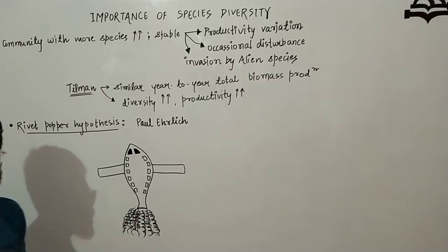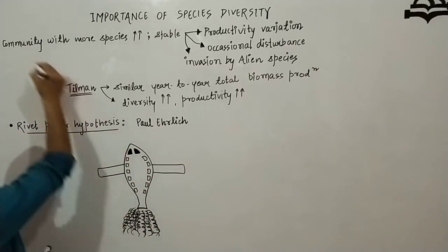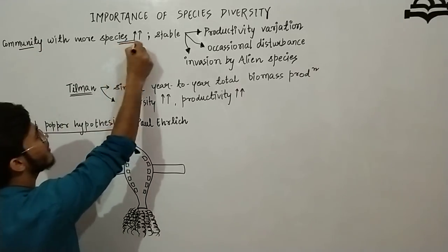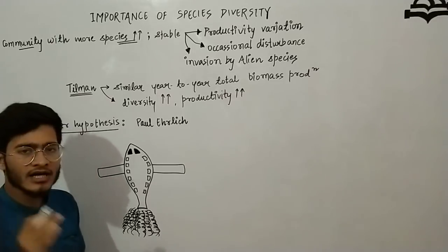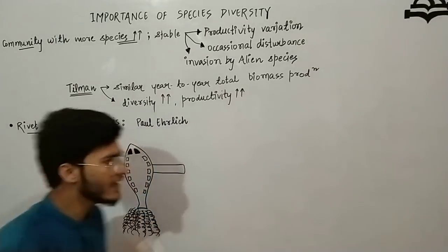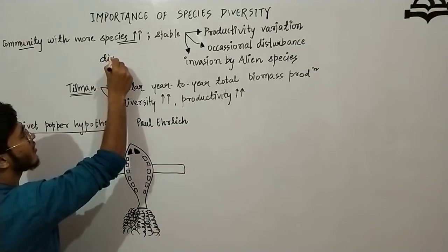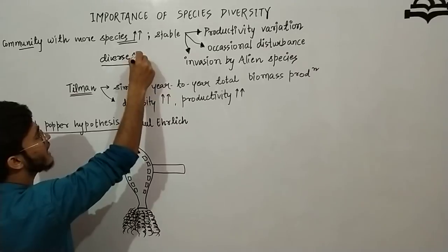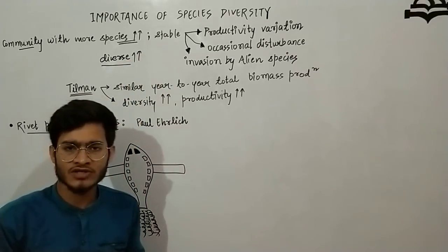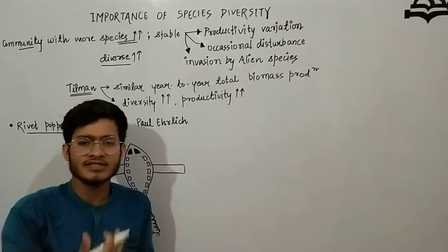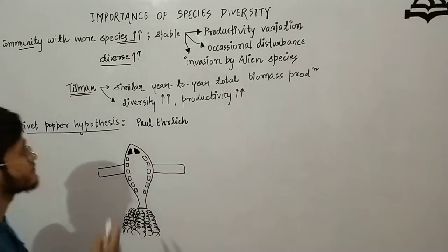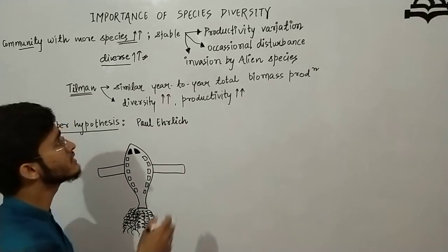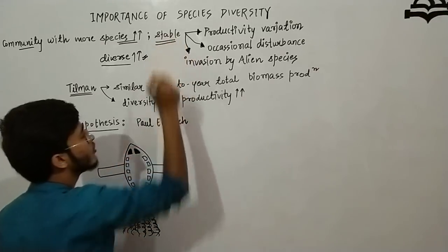The general conclusion we got is: if a community has more species, what does this mean? It means this community is diverse — the diversity is high. Because diversity is directly proportional to the number of species. If species are more, diversity is more. So if a community is diverse, it will be more stable.